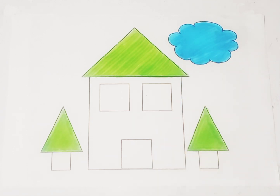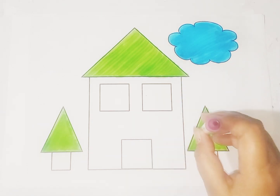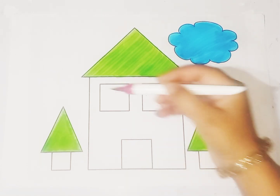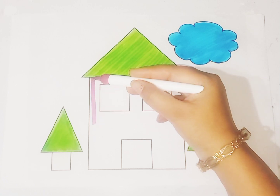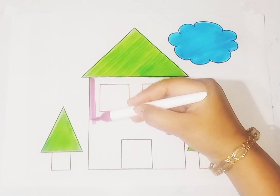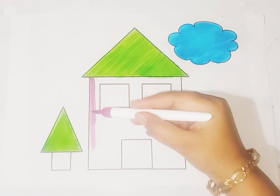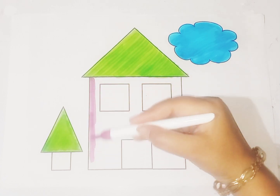Now we use wine color in rectangle shape. This is the room of the shaped house.